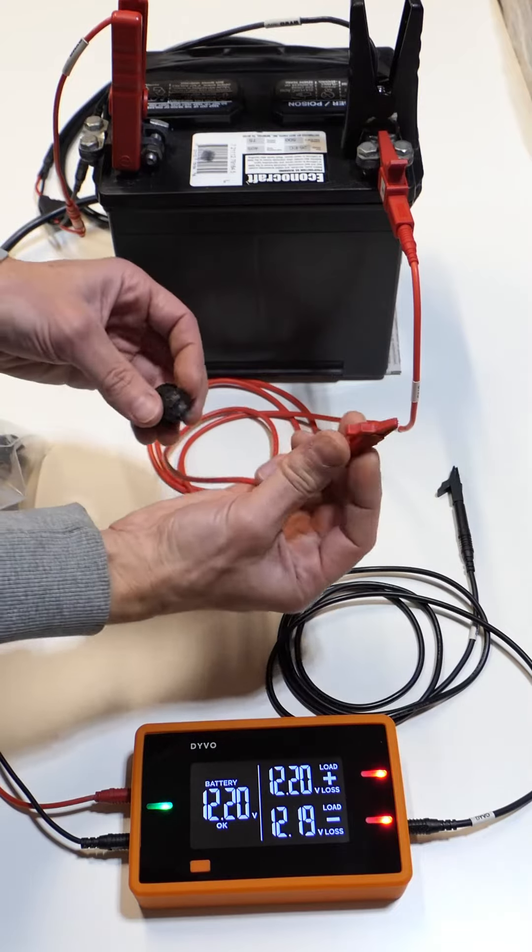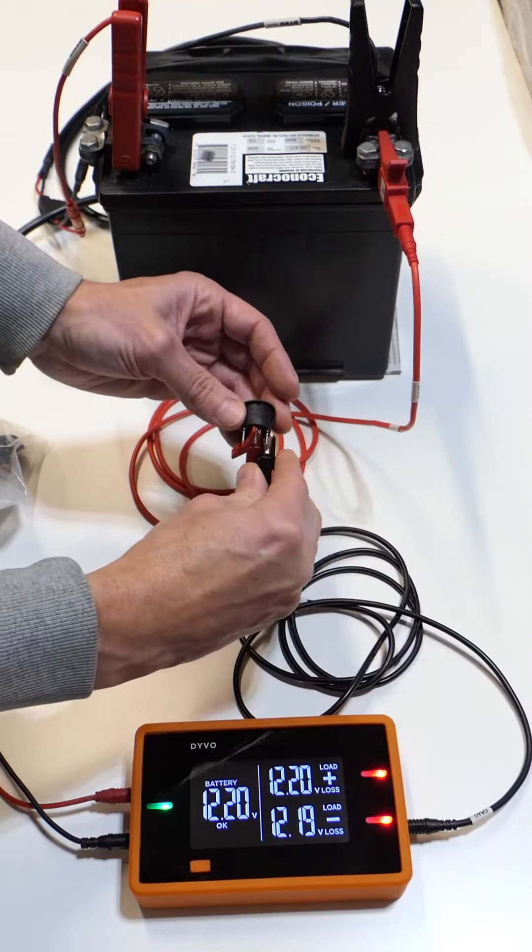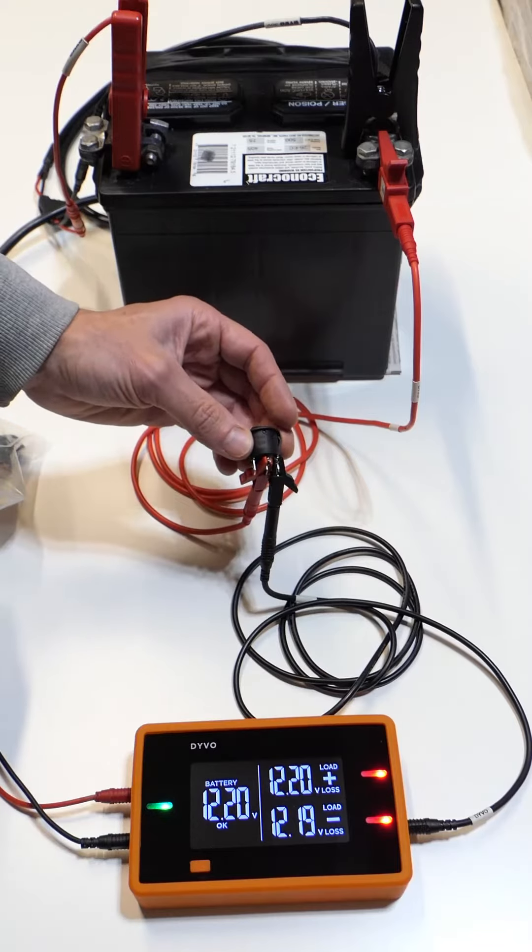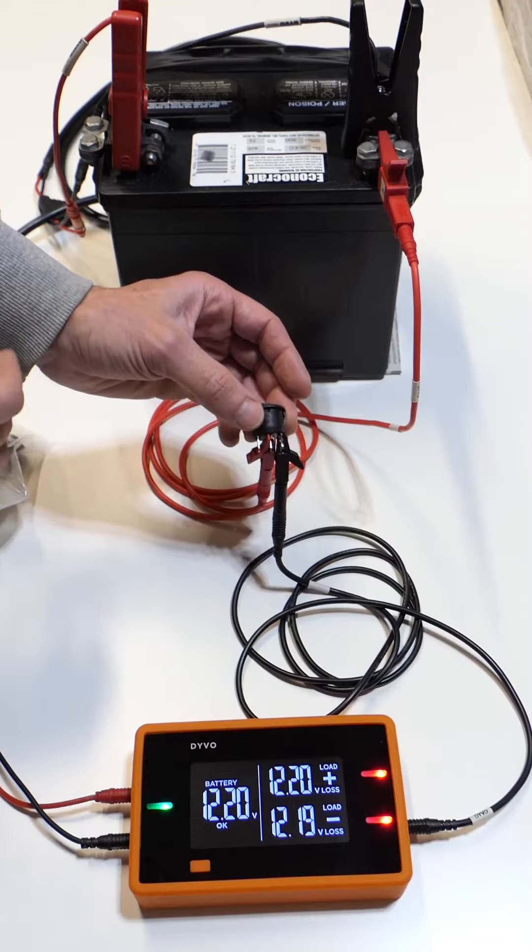I'm gonna connect the red test lead to the center terminal. I'm gonna take the black lead and connect it to one of the output pins. Now this is the opposite pin so I should be seeing a red LED and full battery voltage.